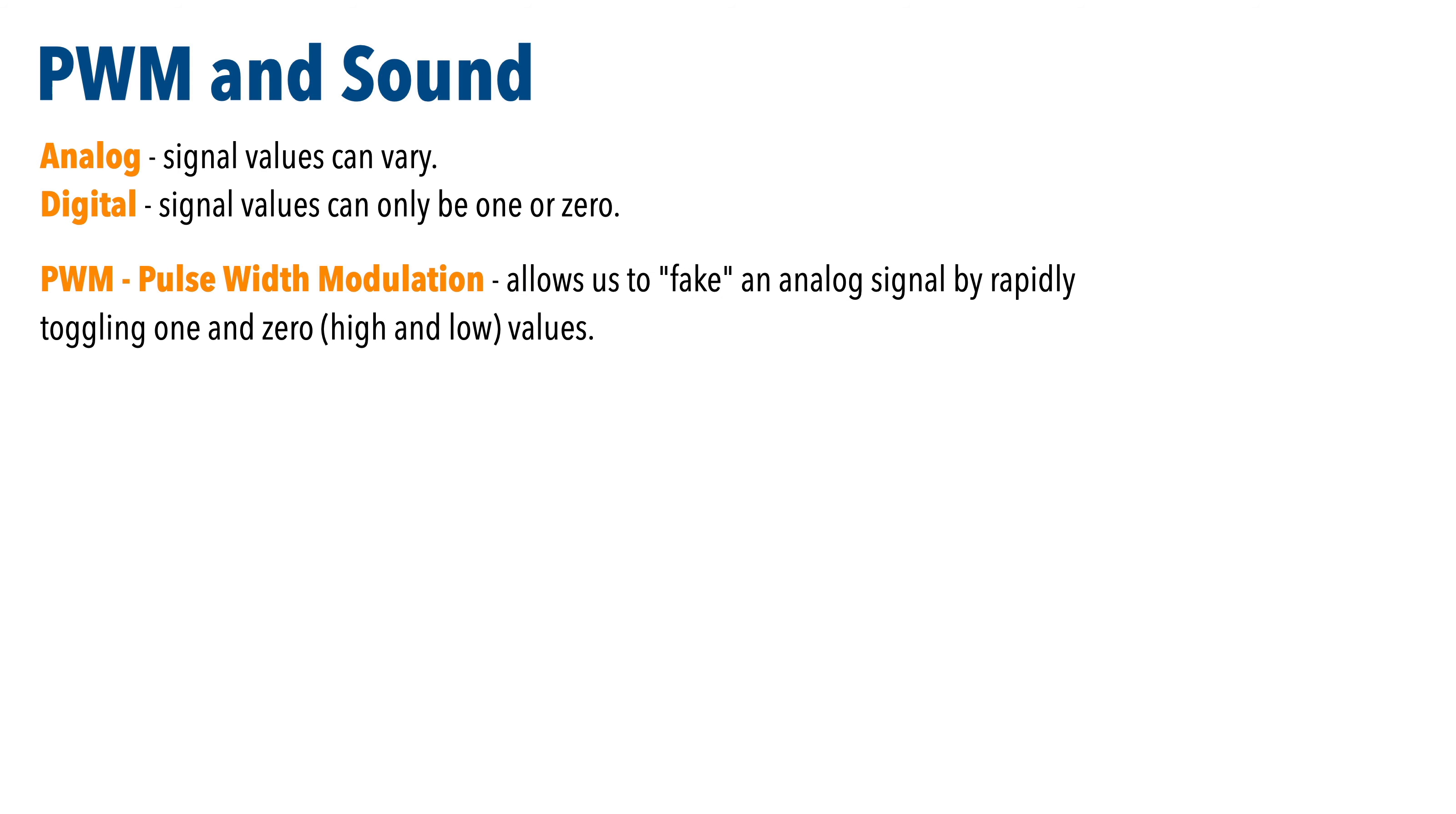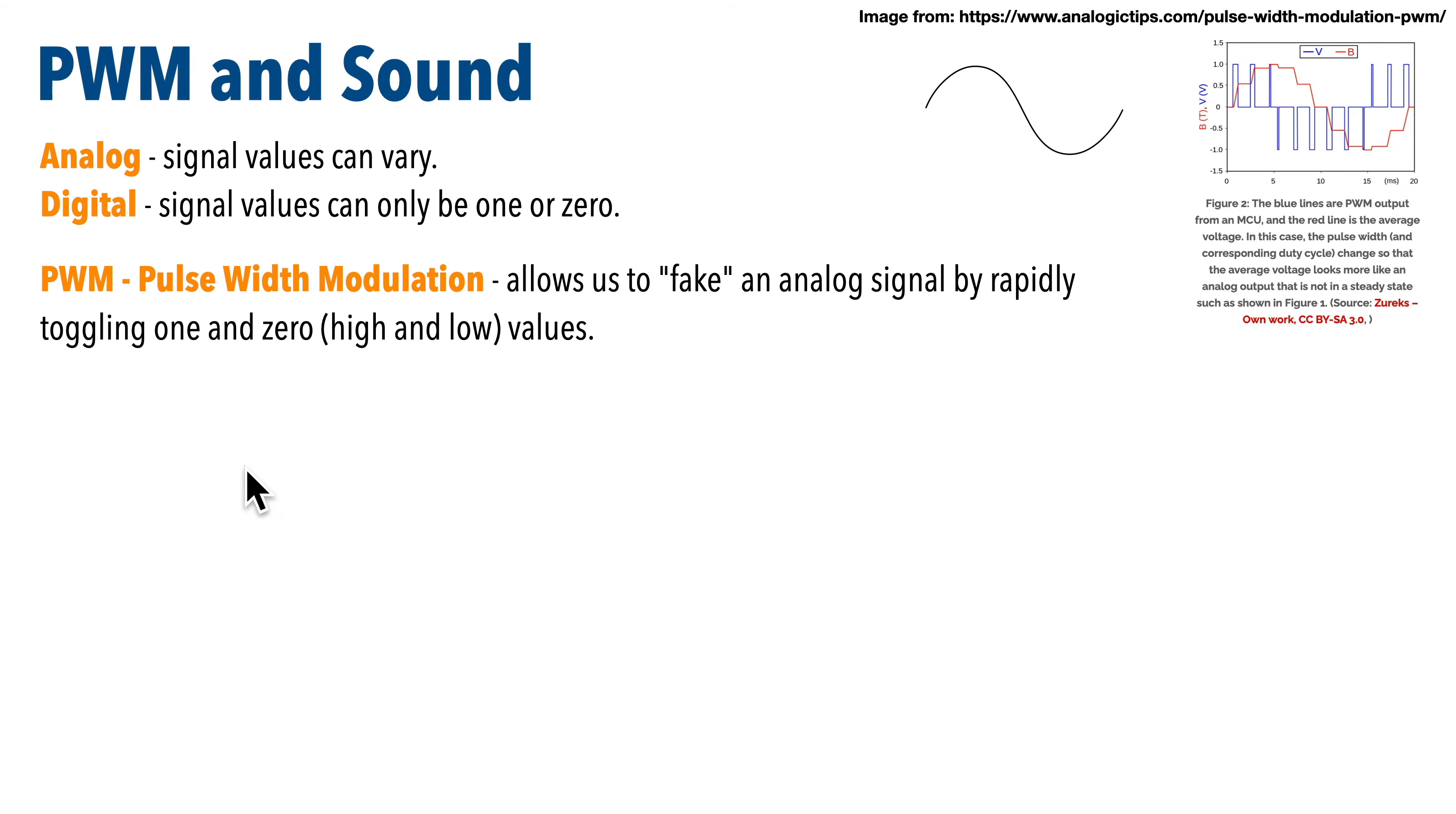Now we're going to be producing sound using PWM, and we've mentioned PWM very briefly in earlier videos, but here's a quick overview. Analog signals can vary, while digital signals can only be one or zero. Computing devices are really good at digital, ones and zeros, not so much with analog. Now PWM, which is pulse width modulation, allows us to fake an analog signal by rapidly toggling ones and zeros or high and low values, like this diagram here. The nicely curved sine wave is meant to represent an analog signal, and over here we've got an approximation of the sine wave by varying our one and zero pulses.